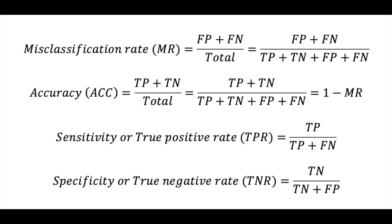That is why you also need to evaluate sensitivity and specificity. Typically, we expect accuracy, sensitivity, and specificity to be 90% or higher. Ultimately, in the industry, the decision will depend on the answer to this question: as the decision-maker, which rate of error is considered acceptable for a business — 1%, 5%, or 10%?